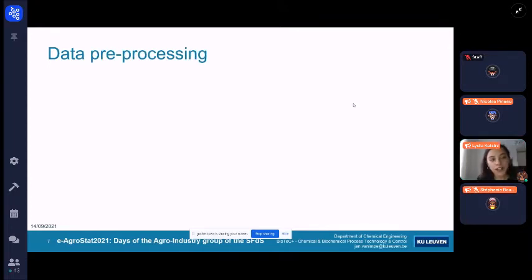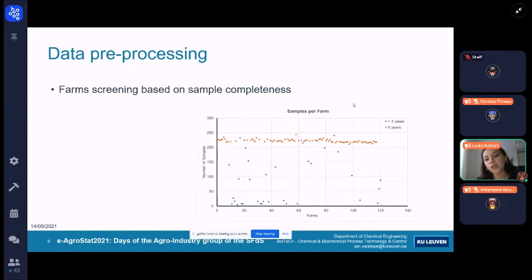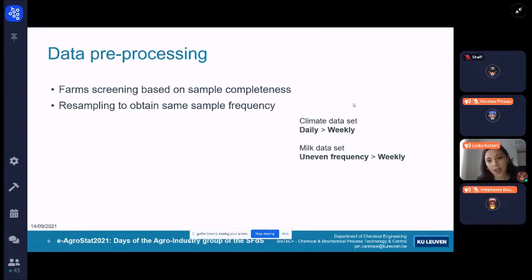When it comes to data preprocessing, firstly, we had to screen the farms because not all the farms were having samples for all the time span of the five years. Secondly, we had to resample our dataset because not all the farms had the same sampling frequency. One farm was reporting weekly, another farm every two weeks. So we had to resample the dataset. And in order to get the same sampling frequency for both datasets, we did that both on the milk dataset and the climate dataset.